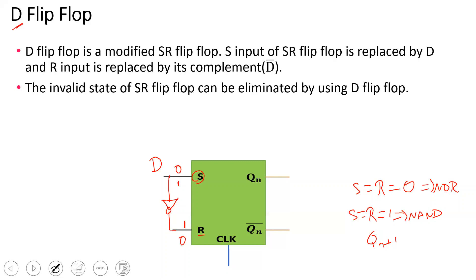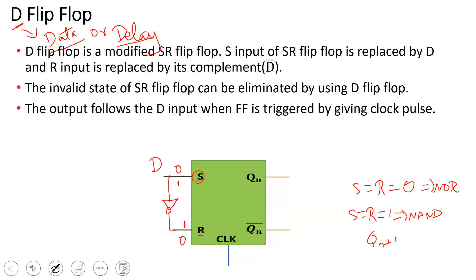In the D flip-flop, D stands for data or delay — it depends on the textbook. The D flip-flop's next state follows the D input. If you have a clock pulse, you have a D input, and the output follows the D input when the flip-flop is triggered by the clock pulse.